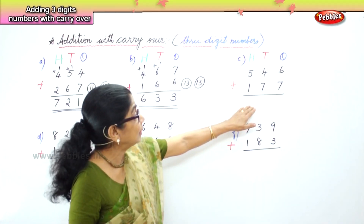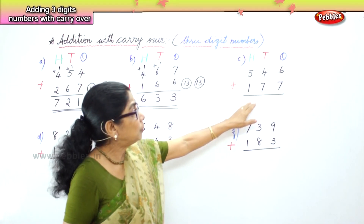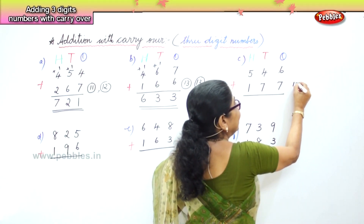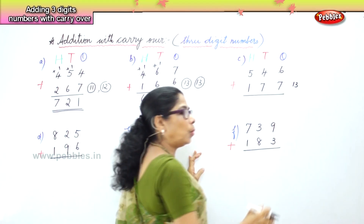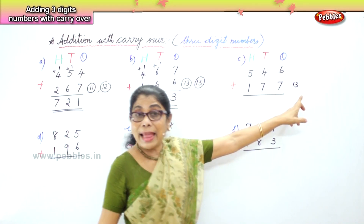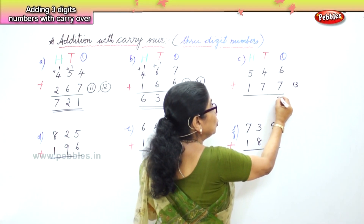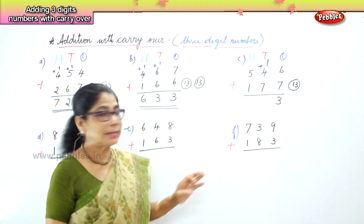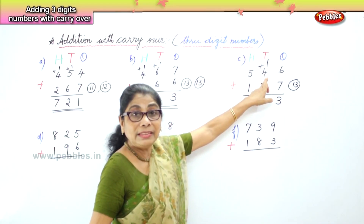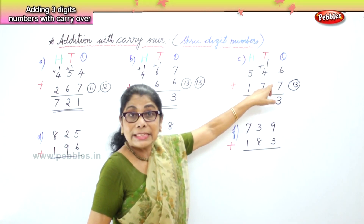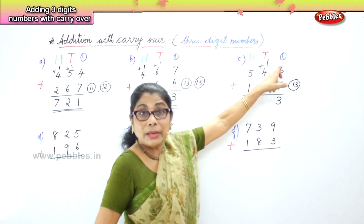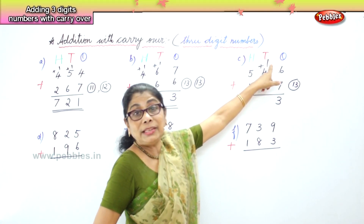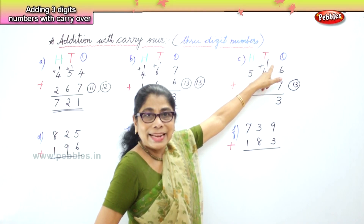Let's go to the next sum: 546 plus 177. In the ones place you have 6 plus 7. What is 6 plus 7? 13 ones. When you get 13 ones, that is 1 ten and 3 ones. Put 3 ones in the ones place and carry the 1 ten over to the tens place. So now in the tens place you have 4 tens plus 1 carried ten: 5 tens.